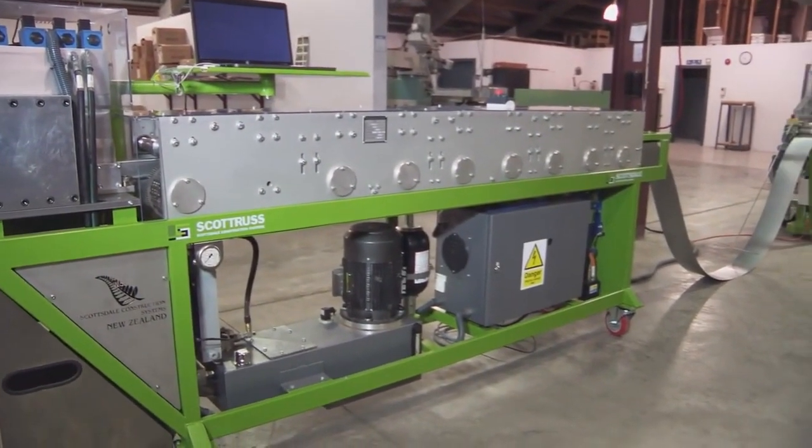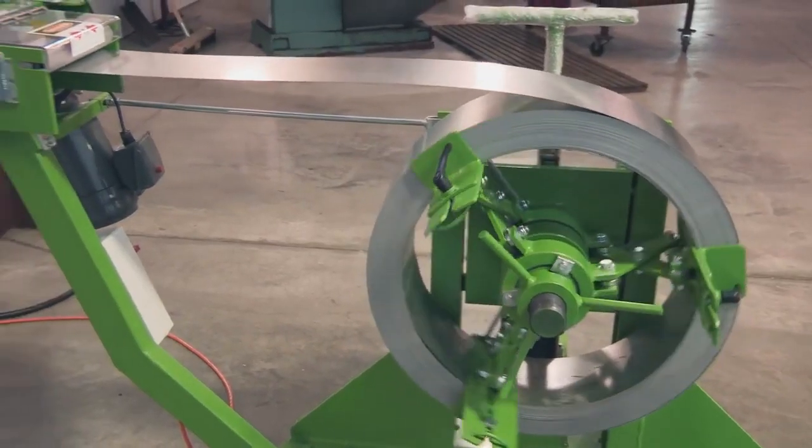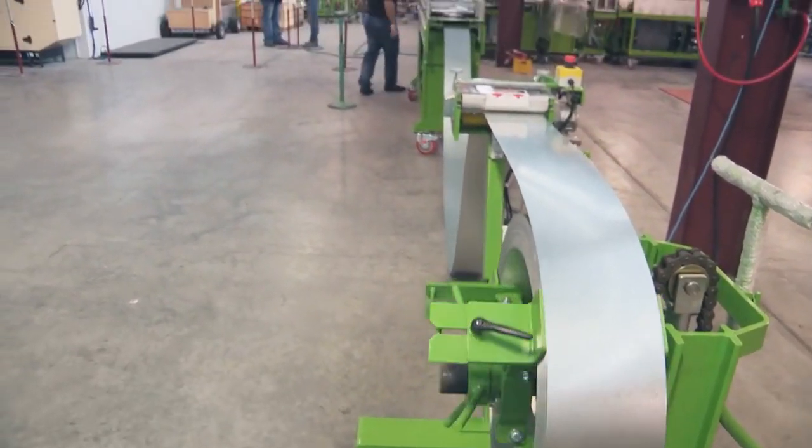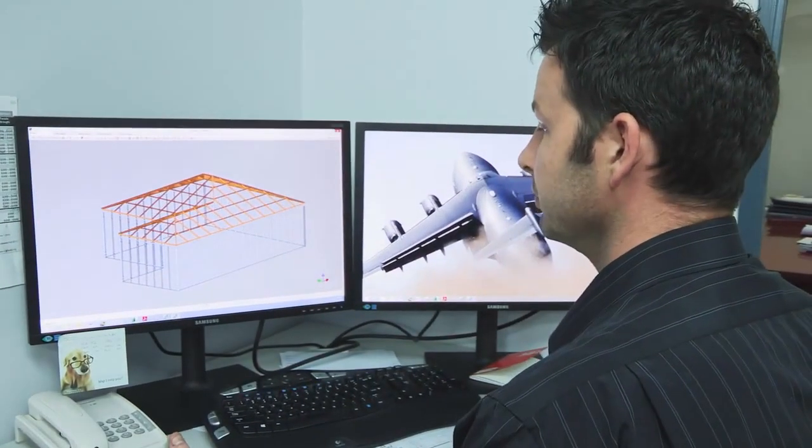Scottsdale Construction Systems provides its customers with a fabrication system that includes a roll former, an automated decoiler that feeds the steel into the machine, and our in-house proprietary design and engineering software.